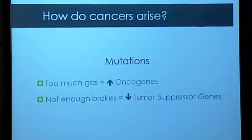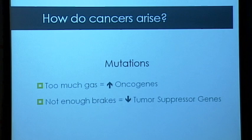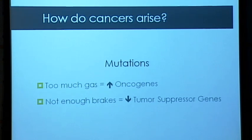What are these mutations? What are ways to make a car go fast? We could either use way too much gas — pushing down on the accelerator too much — and we compare that to activating oncogenes, which are genes that make cells proliferate too fast. Or you could ease up on the brakes, and this car would also be going too fast, and we compare this to turning off tumor suppressor genes.